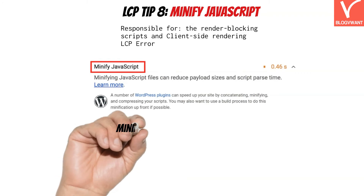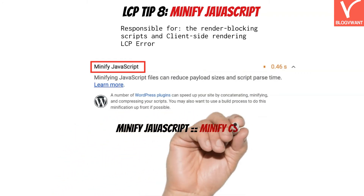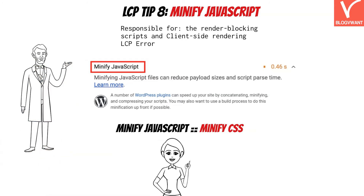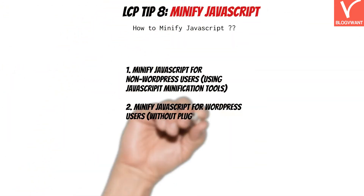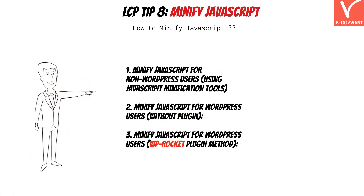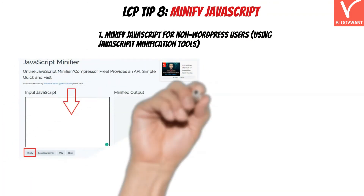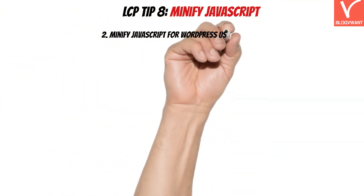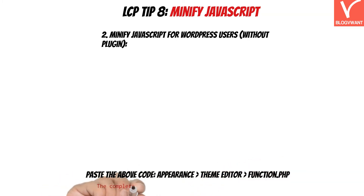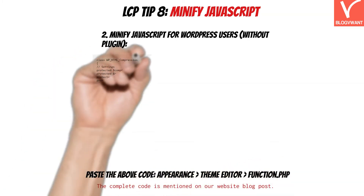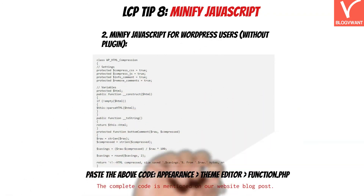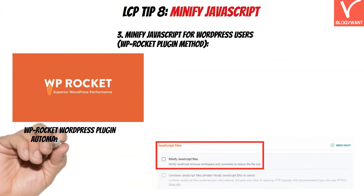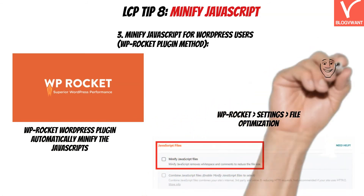LCP Tip 8: Minify JavaScript. If Google PageSpeed is asking you to minify some JavaScript on your website, minifying JavaScript means exactly the same as minifying CSS — we compress the JavaScript code which increases the rendering speed of the LCP content. There are three methods: first, use any online JavaScript minification tool and replace the minified code in the original files. Second, for WordPress users comfortable with coding, add HTML, CSS, and JavaScript minification to the whole website with a single code snippet in the functions.php file. Third — the highly recommended approach — use the WP Rocket plugin, which also has a JavaScript minification feature.